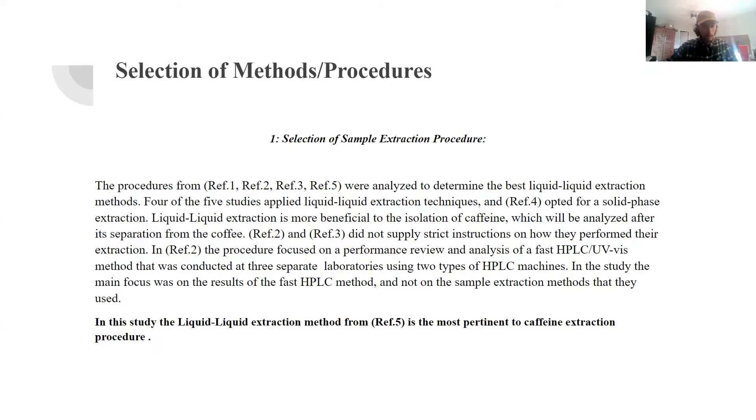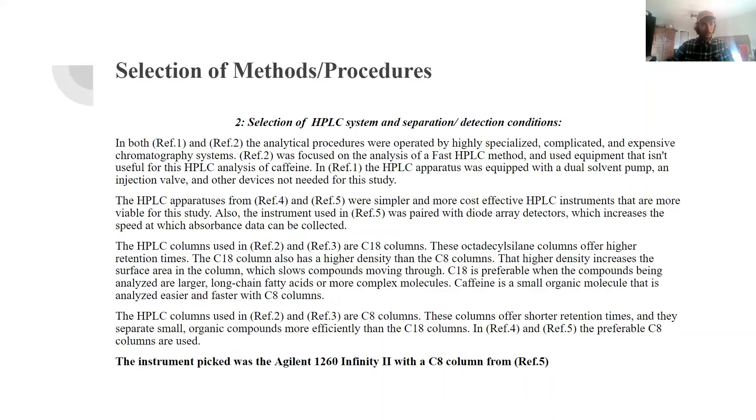References 2 and 3 did not supply strict instructions on how they performed their extraction. In reference 2, the procedure focused more on a performance review and analysis of a new fast HPLC UV-VIS method that was conducted at three separate laboratories using two types of HPLC machines. In the study, the main focus was on the results of the fast HPLC method, and they were not on the sample extraction methods or the procedures that they used. So in this study, the liquid-liquid extraction method from reference 5 will be the most pertinent to the caffeine extraction.